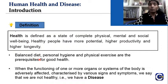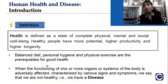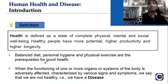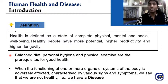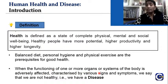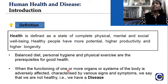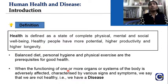Now, the other end of the spectrum — when we say disease: a person who has a sound mind, sound body, good interaction, and good participation in society is healthy; but there is something we call disease. Disease means when the functioning of one or more organs or systems of the body is adversely affected, characterized by various signs and symptoms — we say the person is not healthy. Simply put, when there is an imbalance or dysfunction of homeostasis, it results in disease.